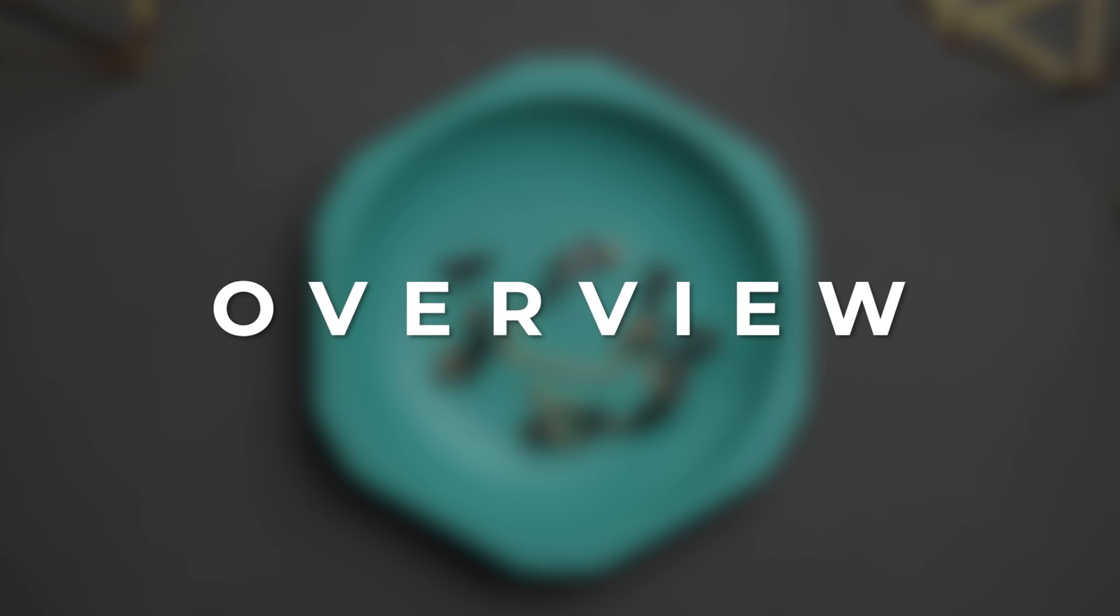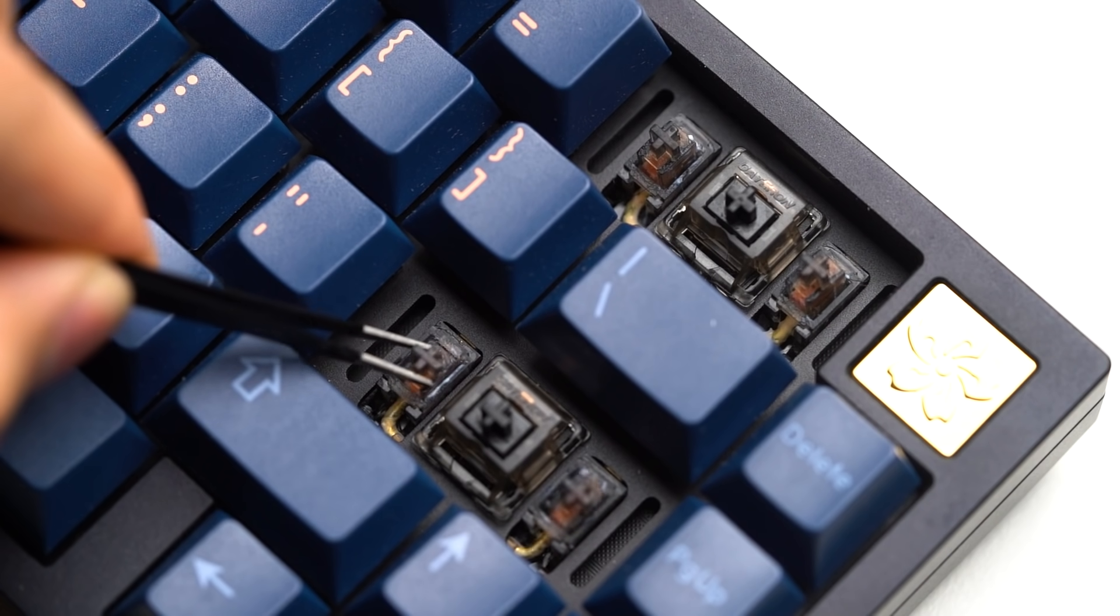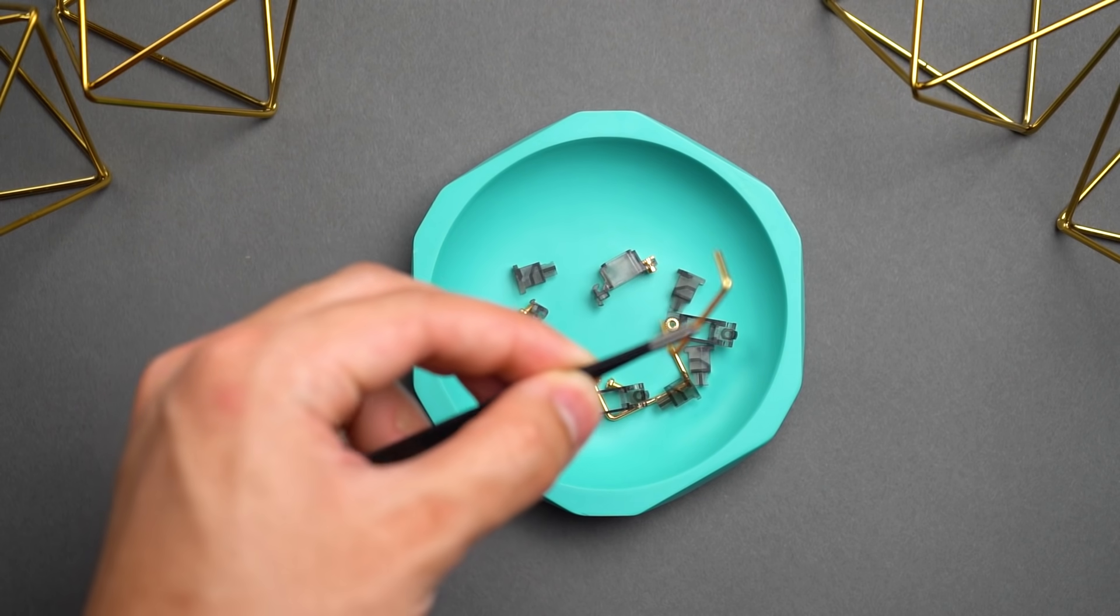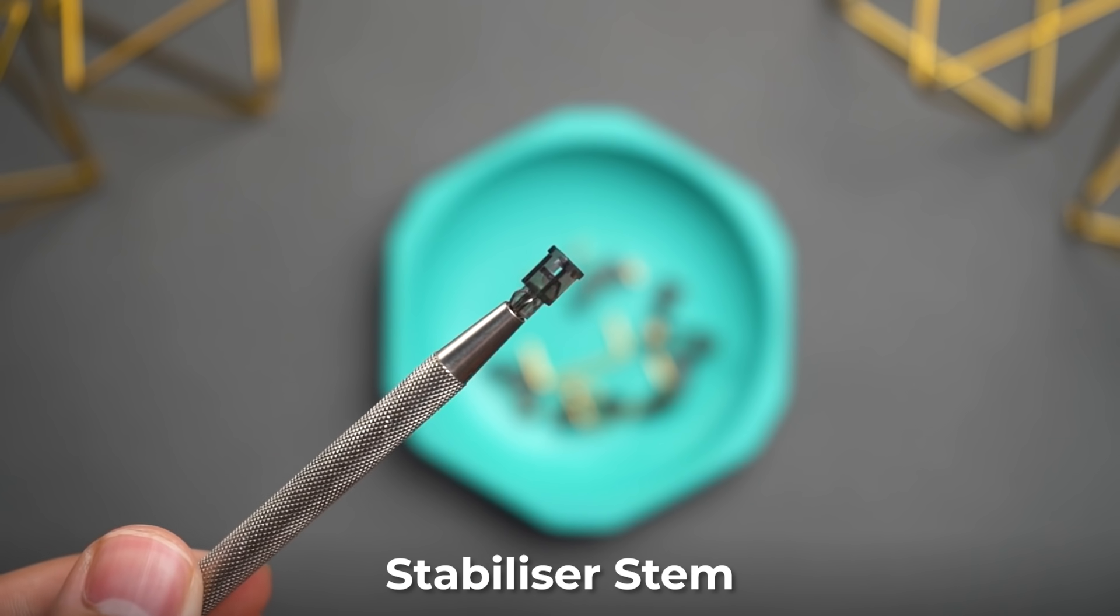There are two types of stabilizers. We have plate-mounted stabilizers and PCB-mounted stabilizers. The holy mod is not exclusive to either type of stabilizers, so you can follow along regardless of which one you have. My personal favorite stabilizers are ZealPC and Duroc V2 Stabs. They are the most consistent and smooth stabilizers I've ever used, so I highly recommend them. Your stabilizers will have three main components: the stabilizer wires, the stabilizer housings, and the stabilizer stems.